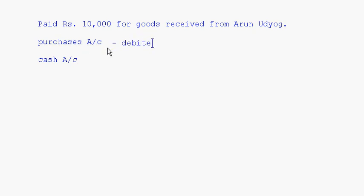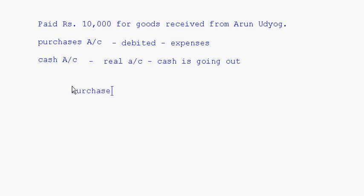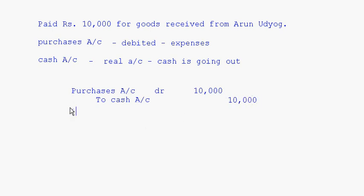Purchases account will always be debited because it is an expense, and we debit all expenses and losses for the nominal account. Cash account is a real account and we are paying the cash, so cash is going out — cash account will be credited. Purchases account will always have a debit balance. Wherever you are purchasing something, purchase is always going to be debited and sales will always be credited — remember that. Purchases account 10,000 to cash account 10,000. Narration: being goods purchased from Arun Udyog for cash.